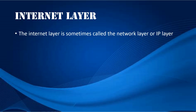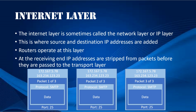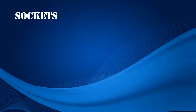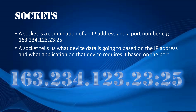The Internet Layer is sometimes called the Network Layer or IP Layer. This is where Source and Destination IP Addresses are added. Routers operate at this level. At the receiving end, IP addresses are stripped from packets before they are passed to the Transport Layer. A socket is a combination of an IP address and a port number — such as our destination IP address and port number 25 in our example. A socket tells us what device data is going to, based on the IP address, and what application on that device requires it, based on the port being used.